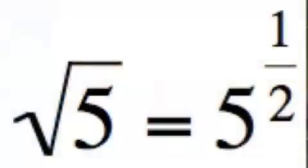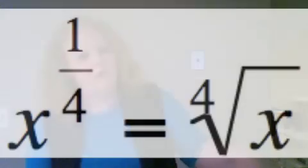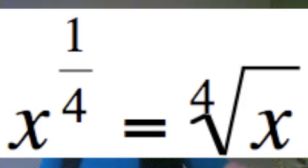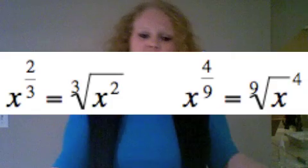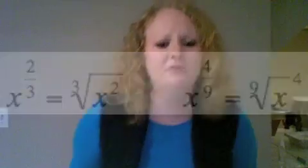If you've got a fraction in your exponent, the denominator is all you need. The square root of five is five to the one-half power. The numerator is the power, the denominator is the root. So if you want to pass your next test, know the rules.